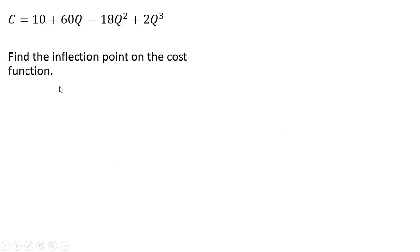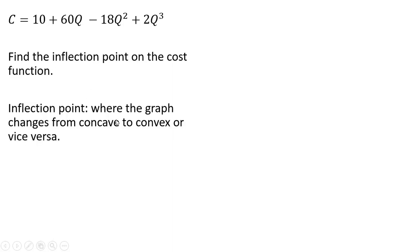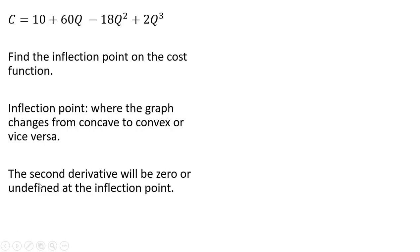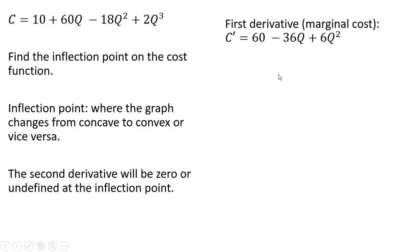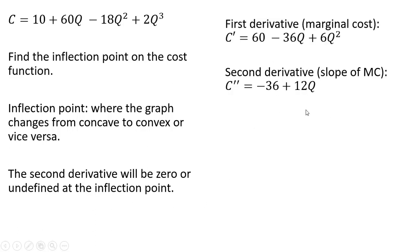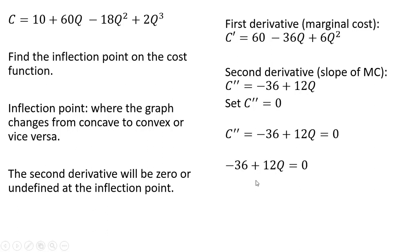Now we want to find the inflection point on this cost function. This is where the graph changes from concave to convex, or vice versa. The second derivative will be 0 or undefined at the inflection point. Setting the second derivative equal to 0 and solving for q gives us q equals 3. So at q equals 3, we are at an inflection point.